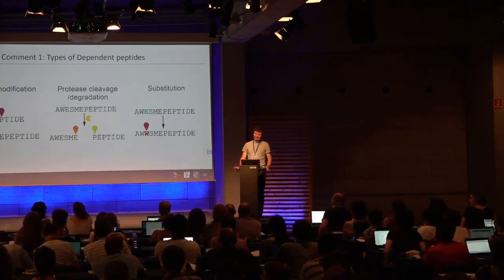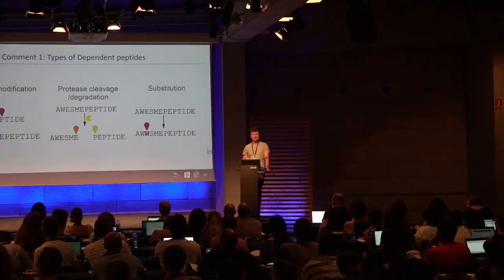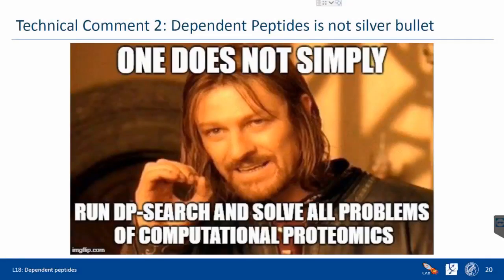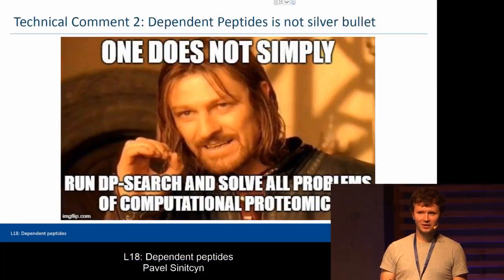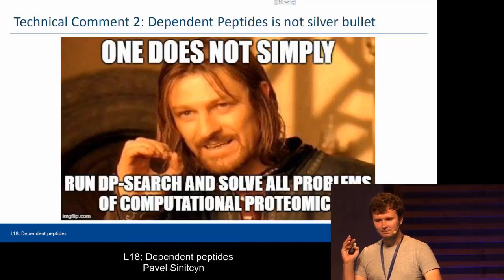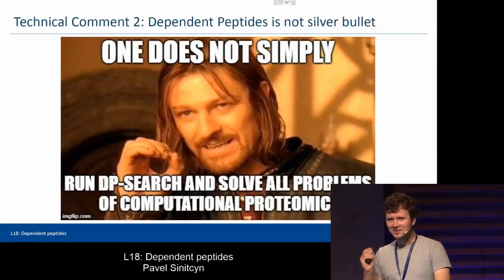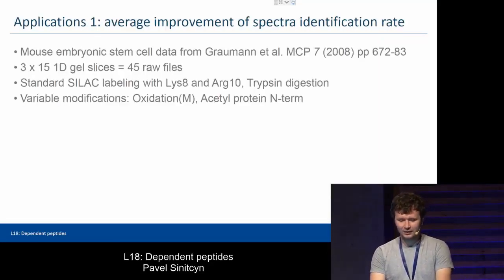You should always be skeptical about new things and put them to a trial. Dependent peptide search is not a silver bullet and will not solve all problems of computational proteomics. What I recommend: definitely try it for normal, non-enriched samples, especially if you have some insight that something strange is happening there. But please keep in mind that running dependent peptide search does not resolve all problems of mass spectrometry-based proteomics.